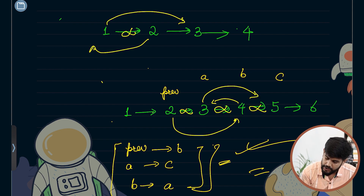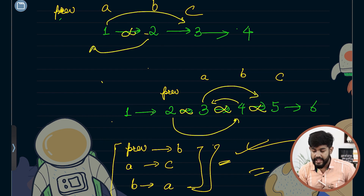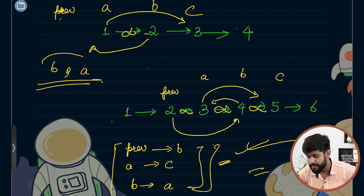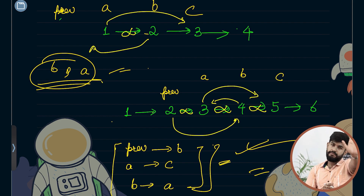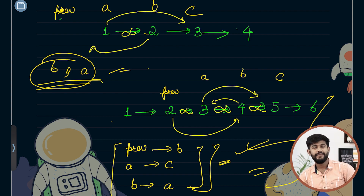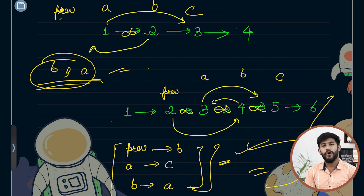If it is the head node, this would be previous, this would be a, this would be b, and this would be c. If a equals head, then b would simply become the new head — we handle this case explicitly. Otherwise, we apply the general three-step modification. No more talking — let's do the same thing in the form of programming.